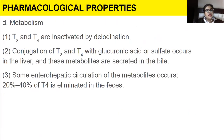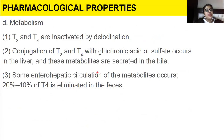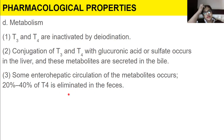T3 and T4 are inactivated by deiodination — the iodine is removed from the tyrosine molecule. Conjugation of T3 and T4 with glucuronic acid or sulfates occurs in the liver, and these metabolites are secreted in the bile. Some enterohepatic circulation of the metabolites occurs. 20–40% of T4 is eliminated in the feces.